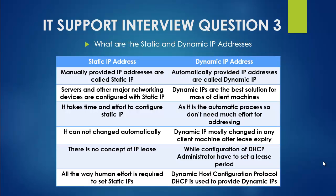For servers and major networking devices, we use static IP addresses because they won't change automatically. In contrast, dynamic IPs are the best solution for a large number of client machines — more than 10 or 20. The best solution is dynamic IP using DHCP. During the initial DHCP configuration, there is a little administrator intervention where you provide the parameters, and then it works automatically, providing IP addresses to all requesting client machines.